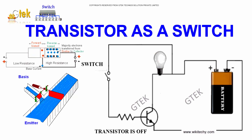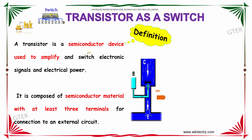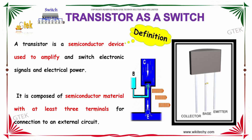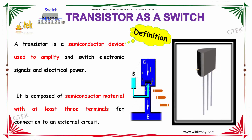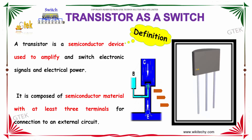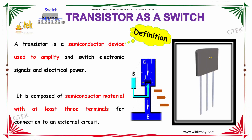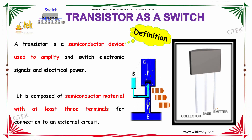Welcome to GTEK TechnoSolutions. We are looking into the area that's transistor as a switch. A transistor is a semiconductor device used to amplify and switch electronic signals and electrical signals. It is composed of a semiconductor material with at least three terminals for connection to an external circuit.